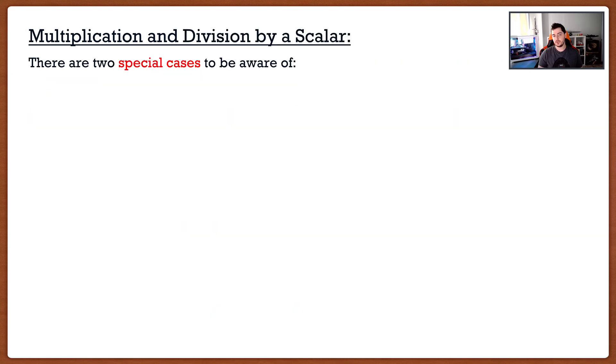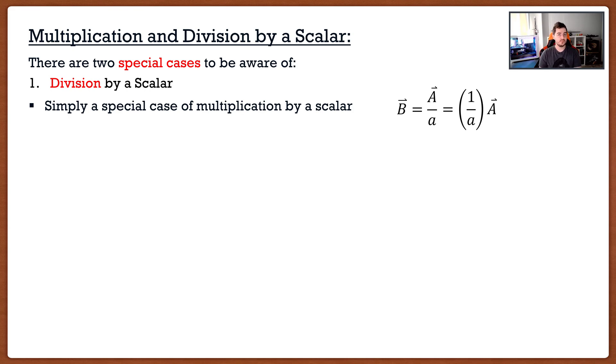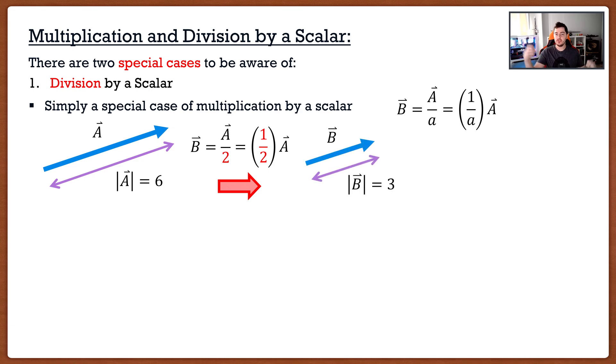Now let's talk about two special cases. The first one is division. Division is actually just a special case of multiplication. Let's say we had vector B, which is vector A divided by the scalar a. This can be rewritten as 1 divided by the scalar a multiplied by vector A. If our original vector A has a magnitude of 6, and I want to divide this vector by 2, this is the same as multiplying by 1/2. The vector went from a magnitude of 6 to a magnitude of 3.